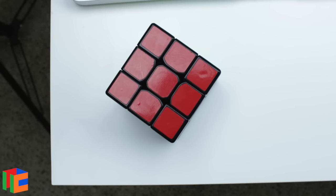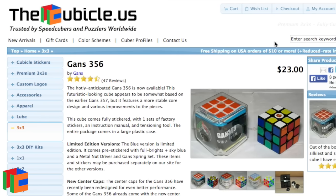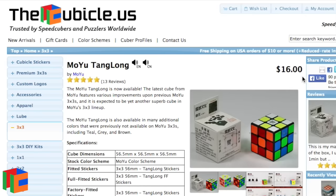First off, I just want to mention the price. While the Gans 356 is well over $20, the Tang Long is closer to $15, so much more affordable for those people on a tight budget.